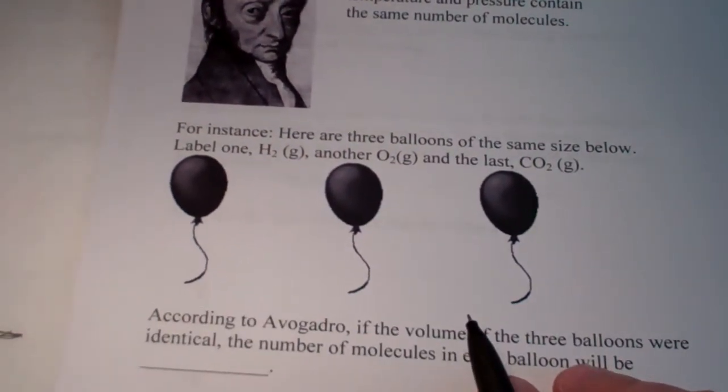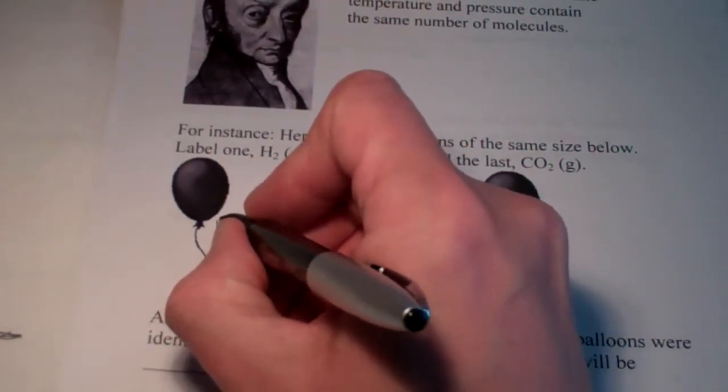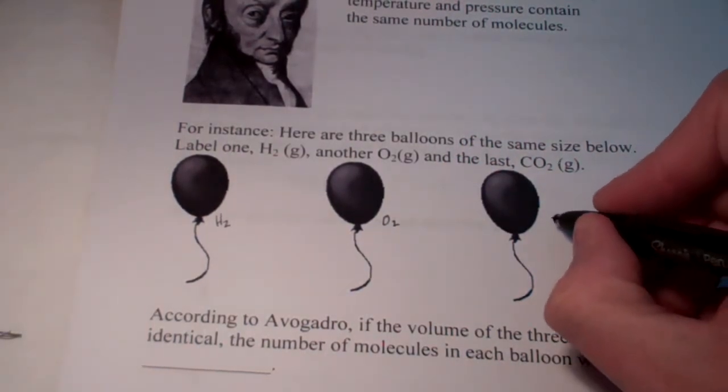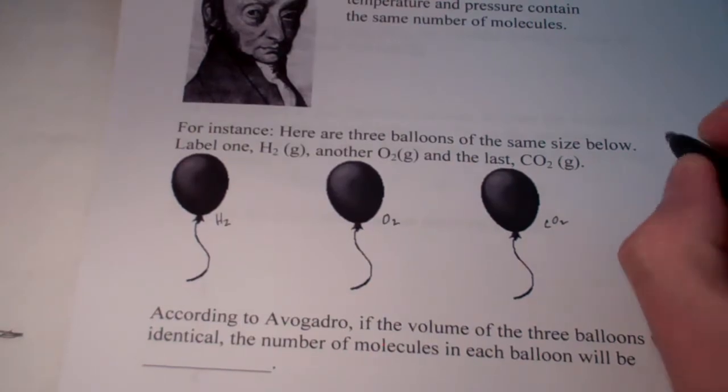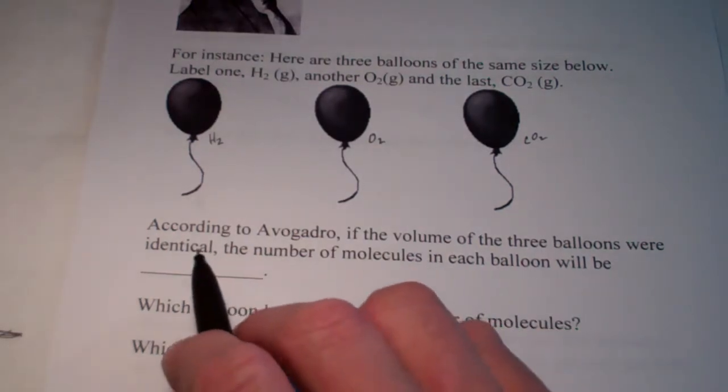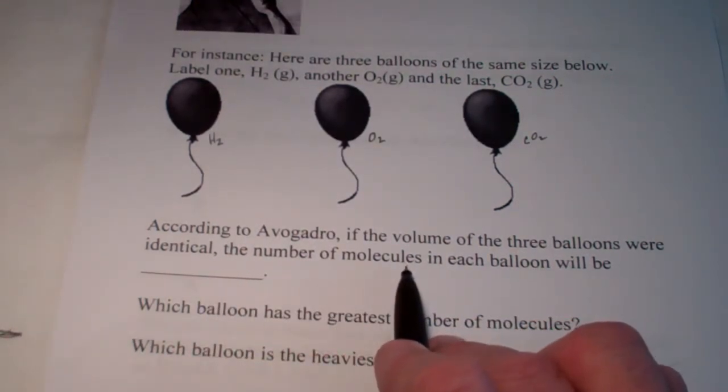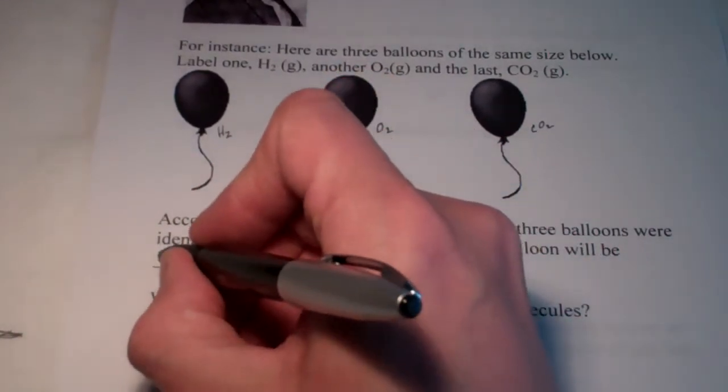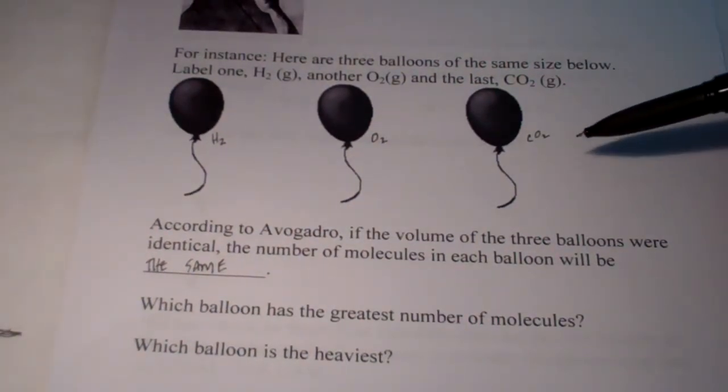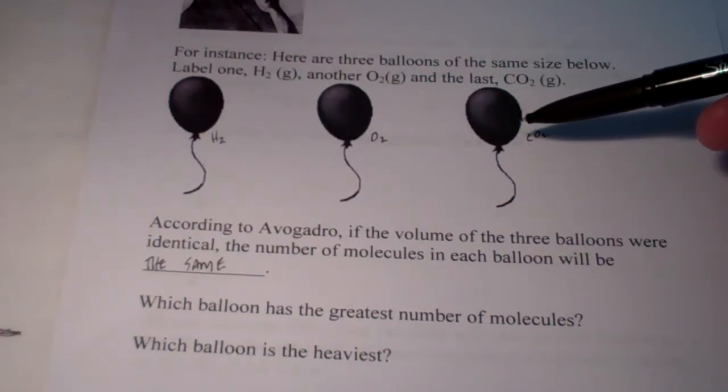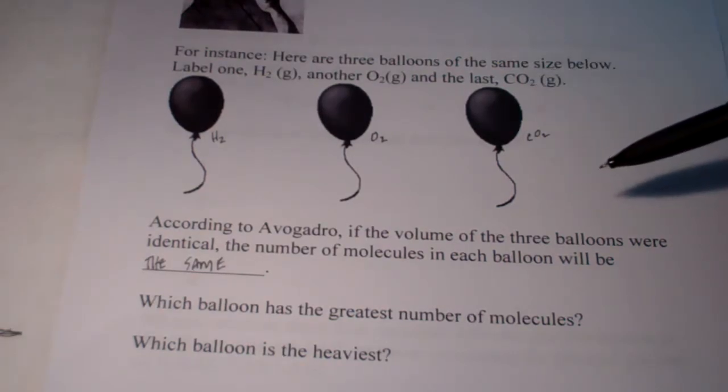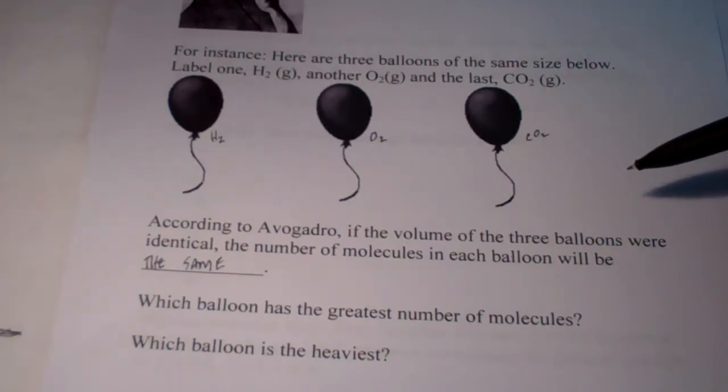Let me give you an example. We're going to pick on three balloons here. We have one that's made up that has hydrogen gas in it. The other has oxygen gas in it. And the other has carbon dioxide gas in it. Now, according to Avogadro, if the volume, the size of these three balloons, were identical, the number of molecules in each balloon would be the same. So, even though one gas is heavier than another gas, the number of particles inside that balloon, so long as the volume is the same, and their temperature is the same, and the pressure remains constant, the number of molecules will also be the same.